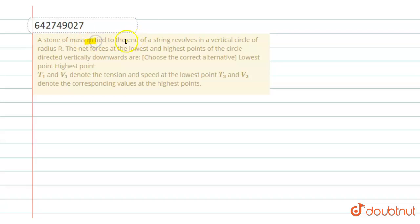A stone of mass m tied to the end of a string revolves in a vertical circle of radius r. The net forces at the lowest and the highest point of the circle directly vertically downwards are lowest point, highest point. T1 and V1 denote the tension and speed at the lowest point.